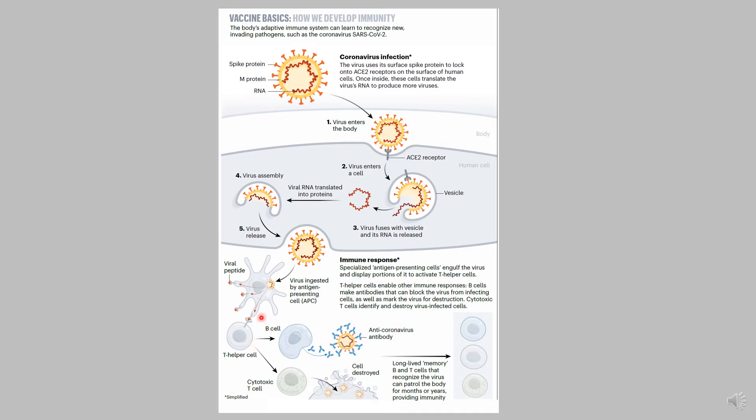The T helper cell can also activate cytotoxic T cells, and cytotoxic T cells can recognize virally infected cells and destroy them. Eventually, you want to have long-lived memory B and T cells that recognize this virus. These patrol the body for months or years providing immunity. The goal of every vaccine is to develop long-lived T and B cell immunity.